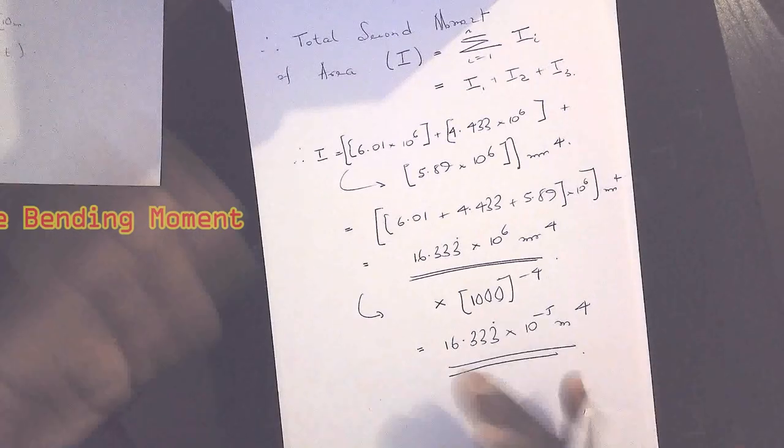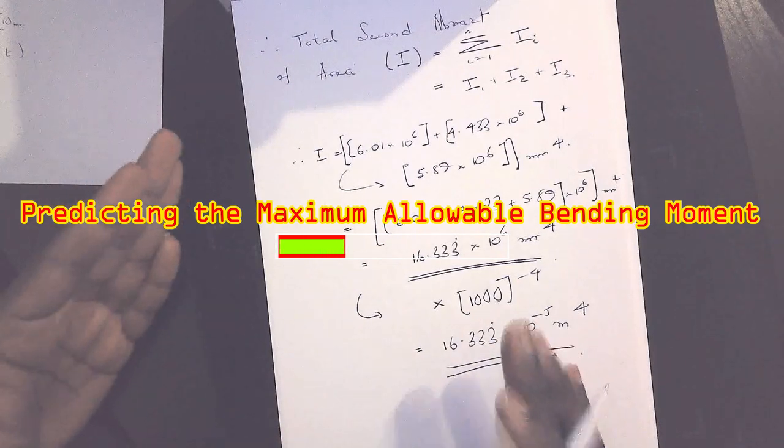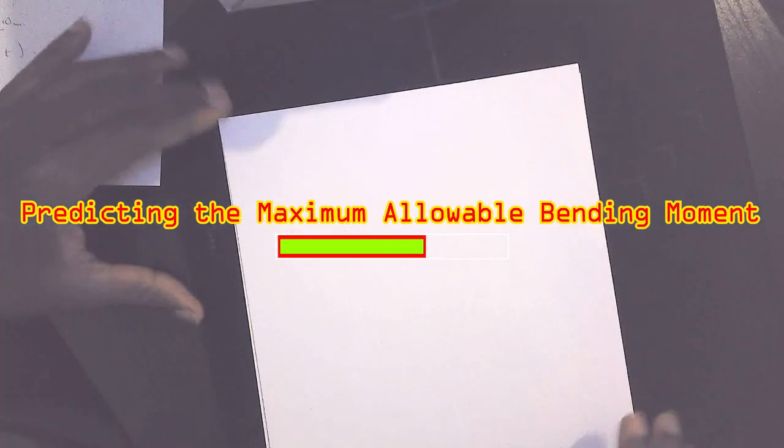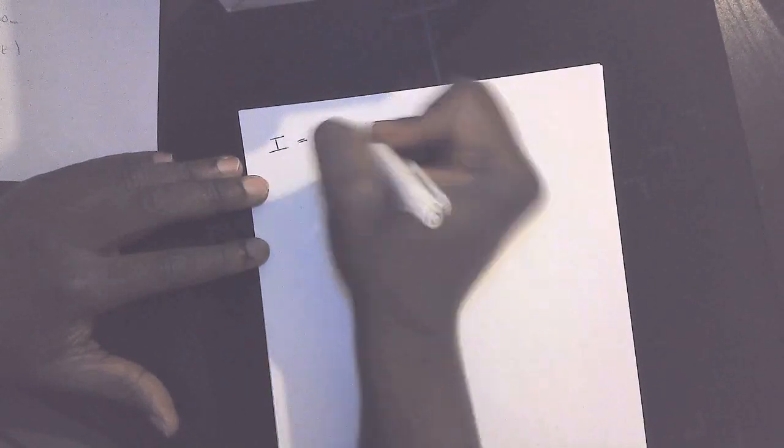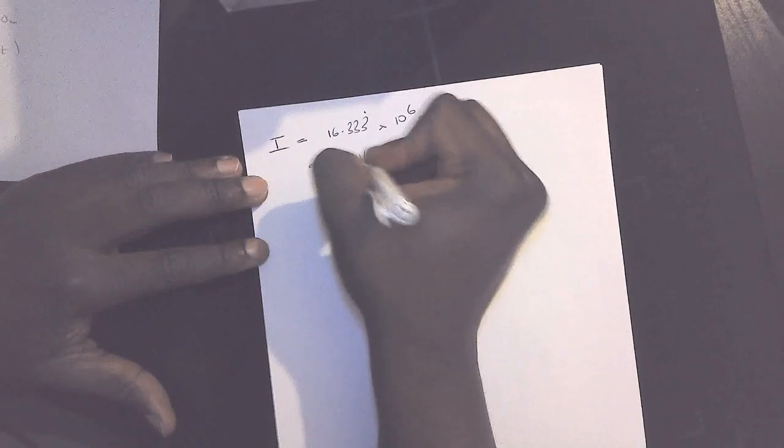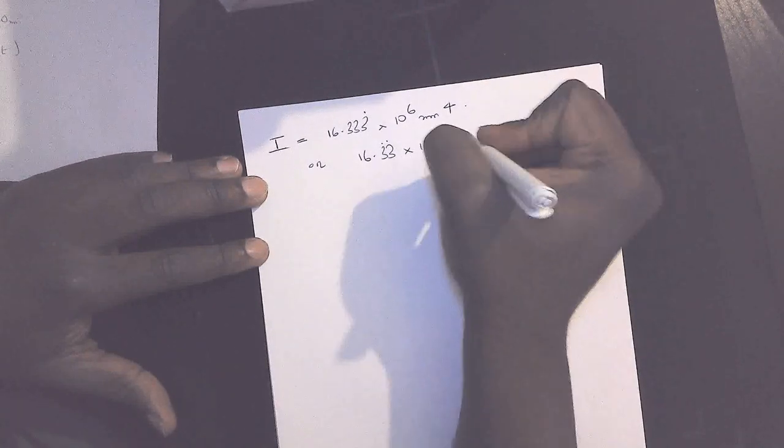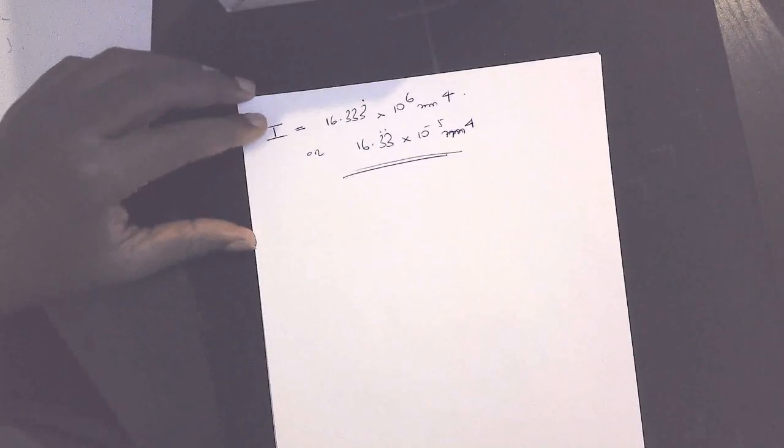Now that we've calculated the value of I, we can proceed to calculate the bending stress on the given beam structure. So what do we know thus far? We've calculated the value of I for the beam, so I is equal to 16.33 times 10 to the power of 6 millimeters to the fourth, or we can have it as 16.33 times 10 to the power of minus 5 meters to the fourth.